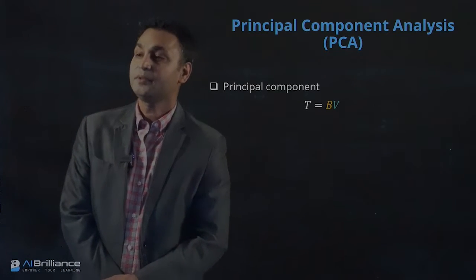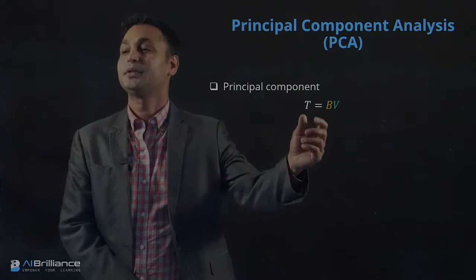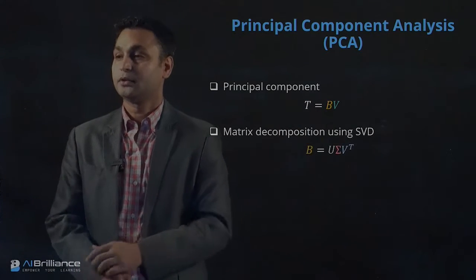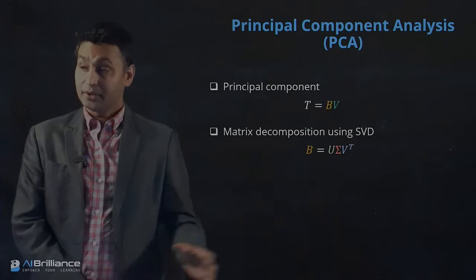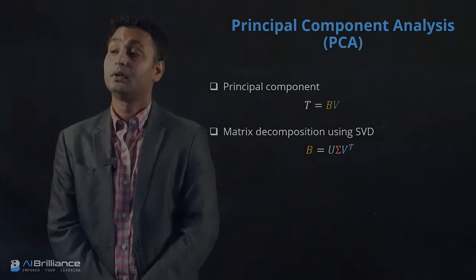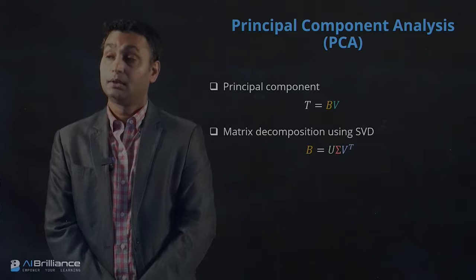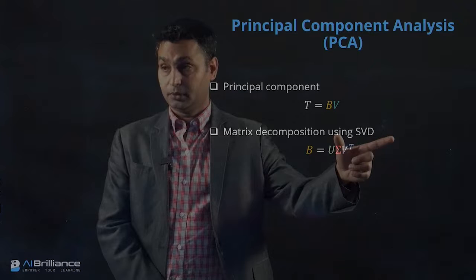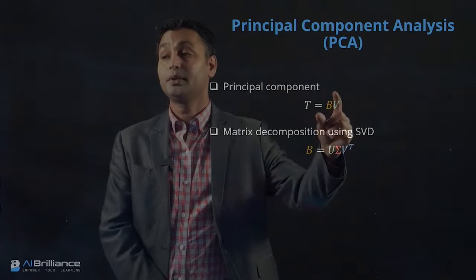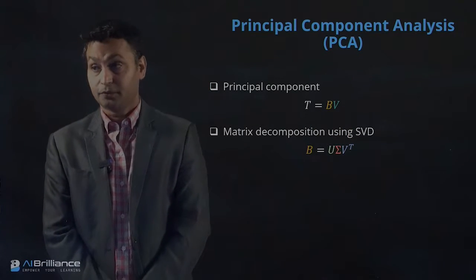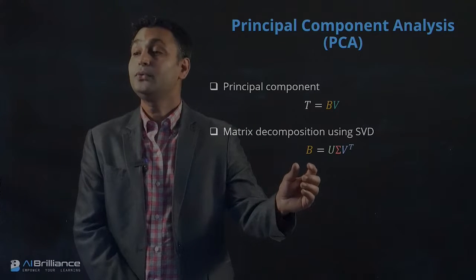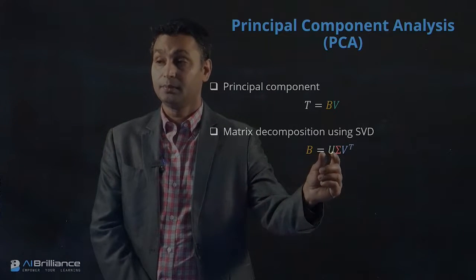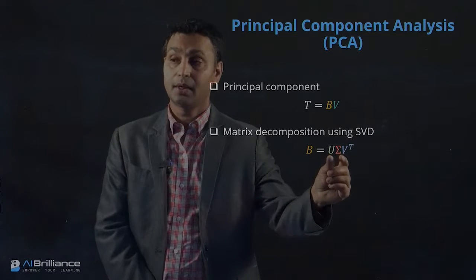So what are the principal components? Principal components T would be essentially B multiplied by B, and the B are the vectors. The second way to do this decomposition is you can do the matrix decomposition using singular value decomposition. So you can take the B matrix that we have computed and we can do SVD of that B matrix and write that as a product of three matrices U, sigma, and B transpose.